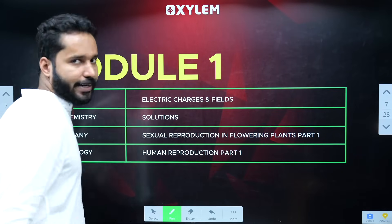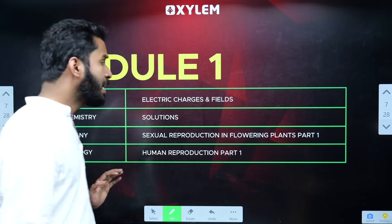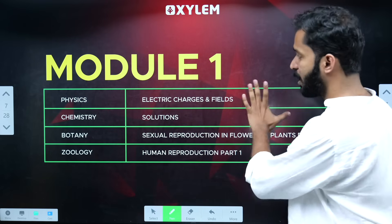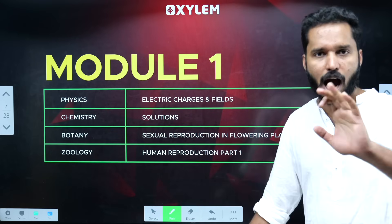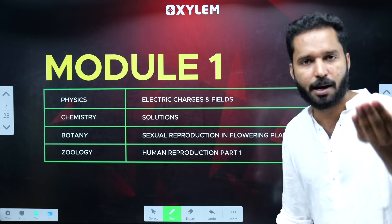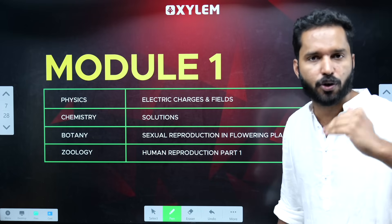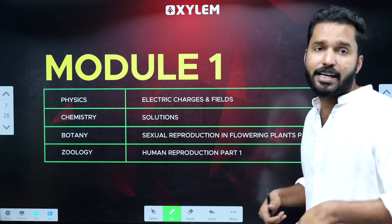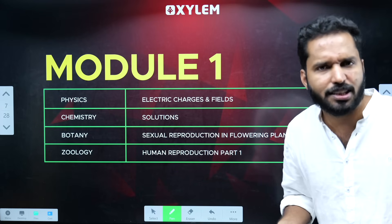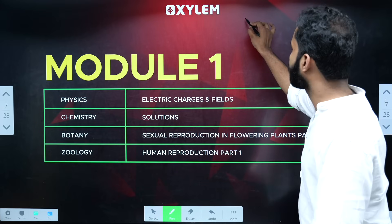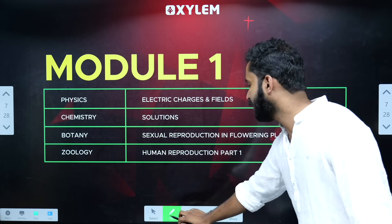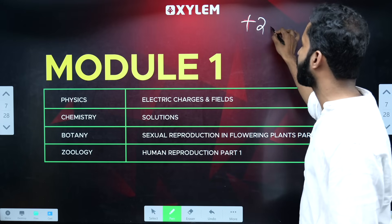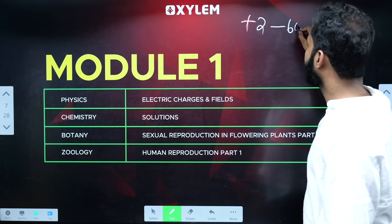Module 1 — we have to support the plus two students with the plus two syllabus. If you have the plus two portions, you have to go to school level. That's why you have to support the plus two.